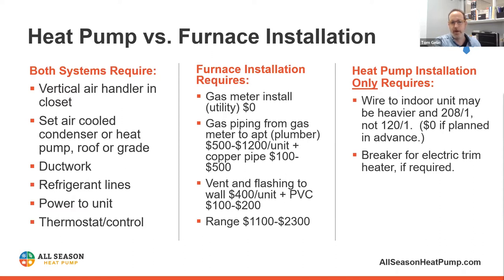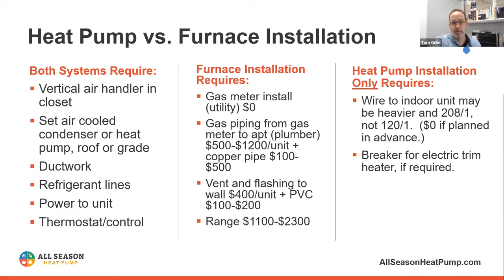With a furnace, the utility company installs a gas meter — they generally don't charge for the meter itself. But you do have to run gas piping from the meter to the apartment. For a two-story walk-up that may not be terribly expensive, but you have to buy the pipe and spend the time running it. That can be anywhere from $500 to $1,200 in labor, and the copper pipe might be $100 to $500, so somewhere between $600 and $1,700 for gas piping.